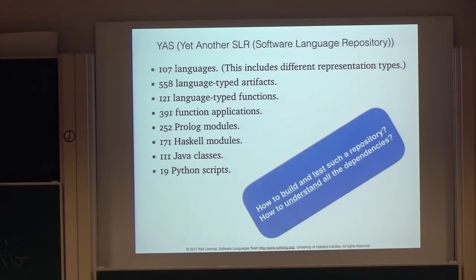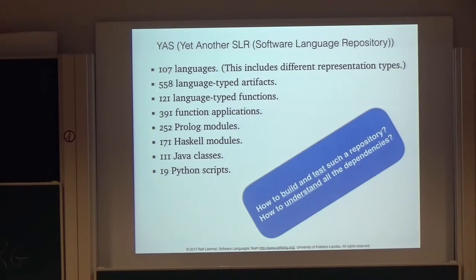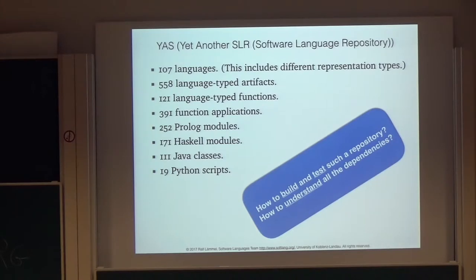The research question is: what is an appropriate way to build and test such a repository? A software language repository isn't dramatically different from a normal software system, but it's a bit nicer in that you always think in terms of languages, so every file is of some language type. The challenge is: should I use all the different make and build management systems? How much code should I write to manage all these relationships? This is what this work tries to improve on via a domain-specific language called Uber.